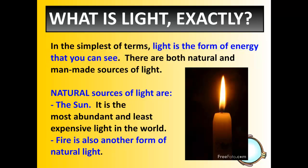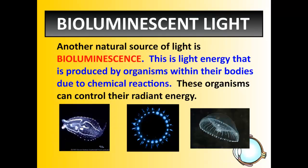Natural sources of light we automatically think of are, of course, the sun and the candle flame — both fire, as many people have said, but not quite. The sun and fire are the most common ways to think of natural light. We can also think of natural light as something produced in nature, and one natural light source is called bioluminescence.